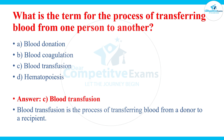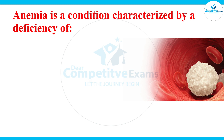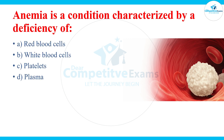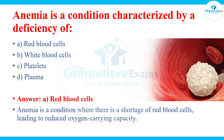Anemia is a condition characterized by a deficiency of what? The answers are red blood cells, white blood cells, platelets, or plasma. The answer is red blood cells. Anemia is a condition where there is a shortage of red blood cells, leading to reduced oxygen-carrying capacity.